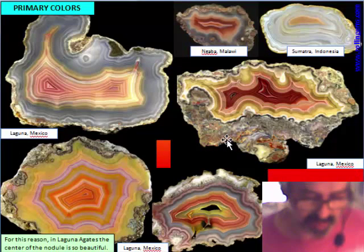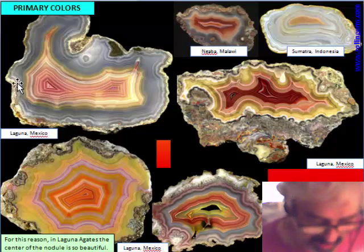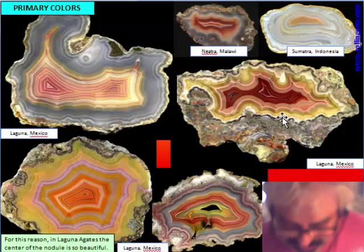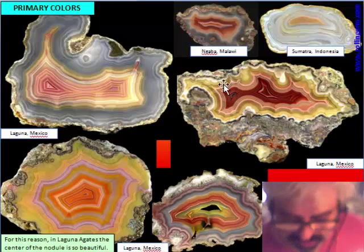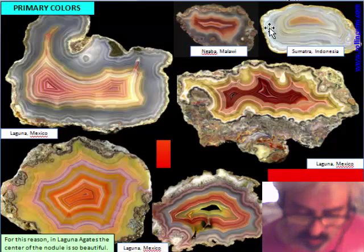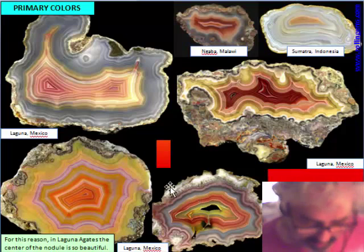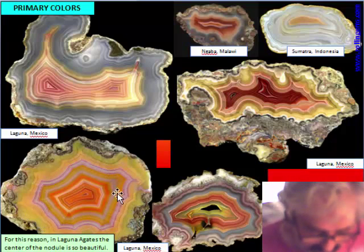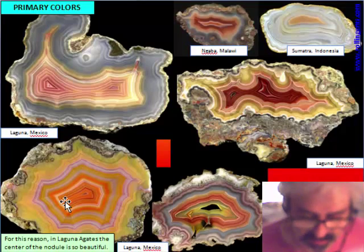These are some cases of primary color. This is a Laguna agate — we see all around it is transparent. All the color starts from here and increases toward the center. Another Laguna starts with low color and more dark, deep colors are near the center. This is a Malawi agate; all around are transparent or white. Another Laguna also has some color at the beginning, but more deep and important colors are near the center of the banding.